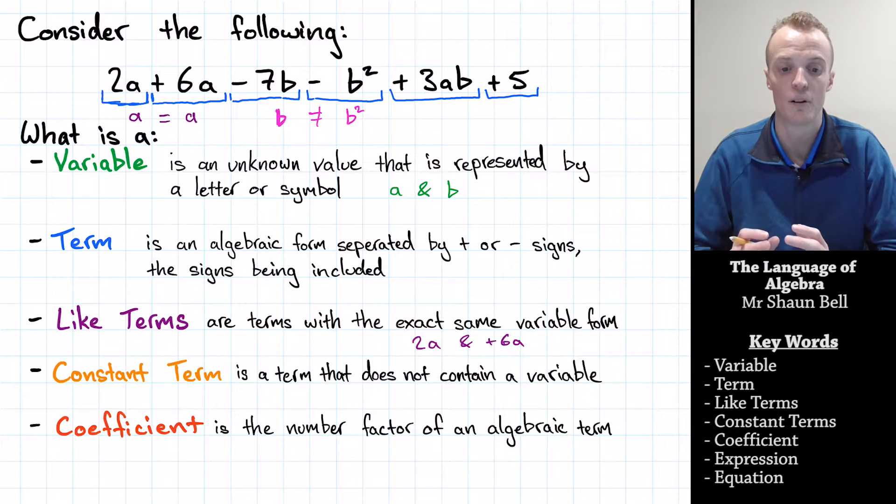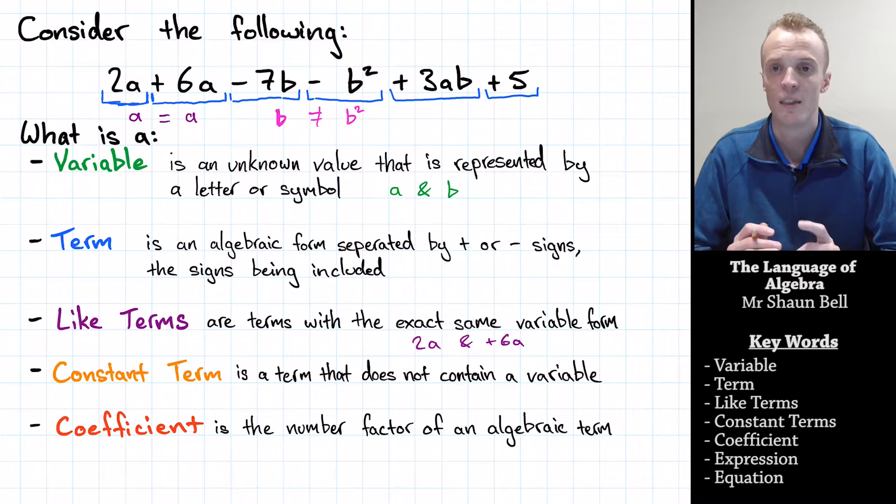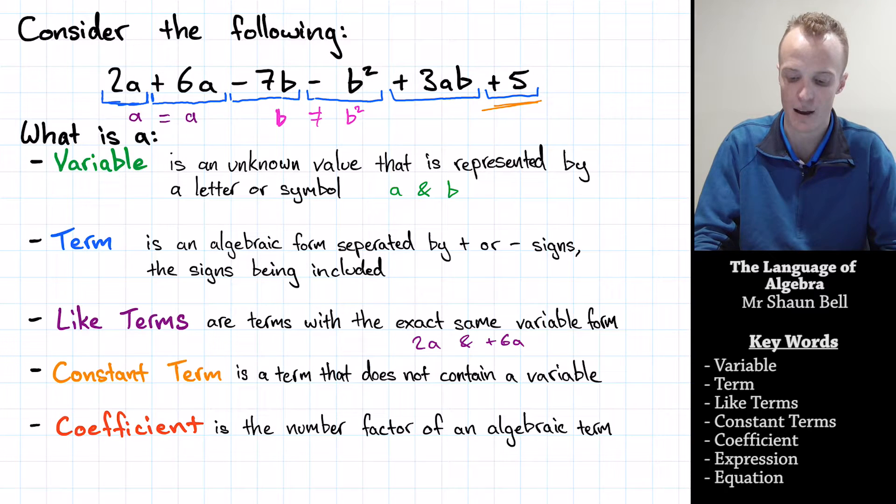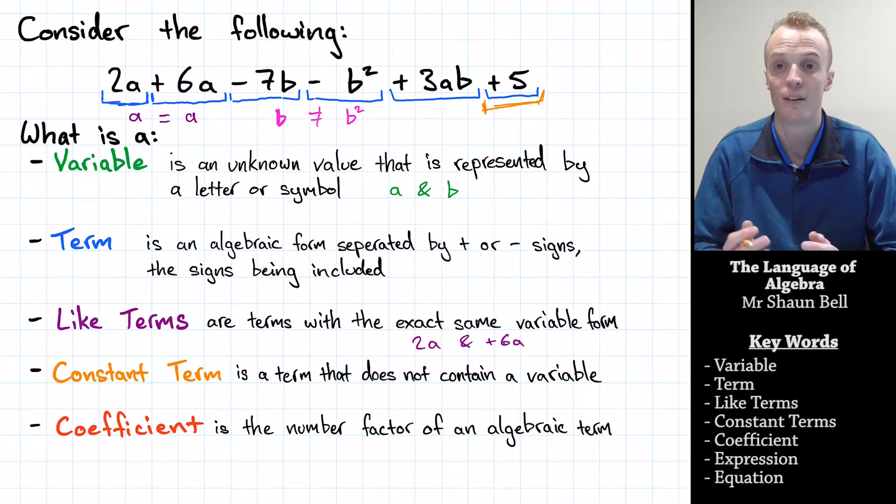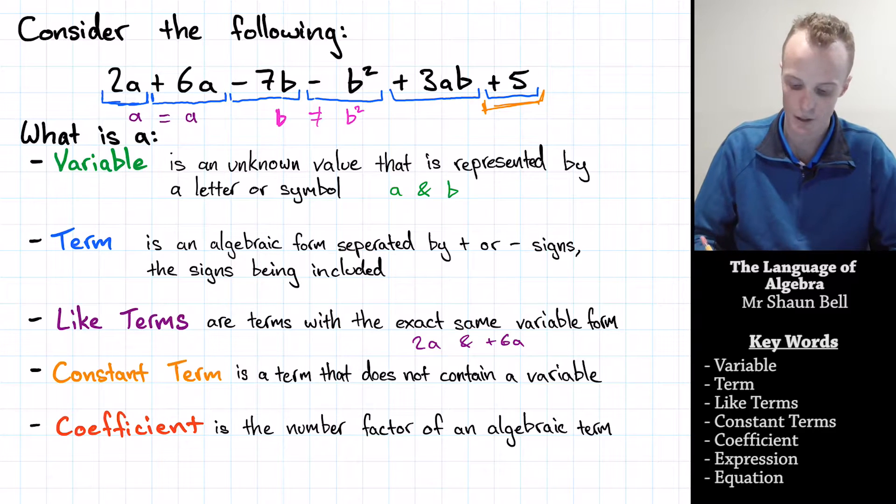Now, the next word you might come across is constant terms. A constant term is any term within a statement that does not contain a variable. Now, in our algebraic statement that we've got, there is only one constant term, and that is the sixth term that we have right here, that plus 5. It doesn't have a variable within the term, so the value of that term is always the same. Hence, the name constant term. So our constant term in this statement is plus 5.